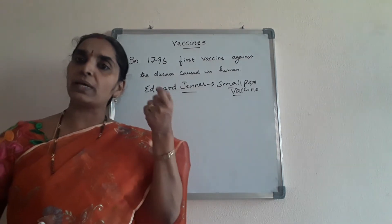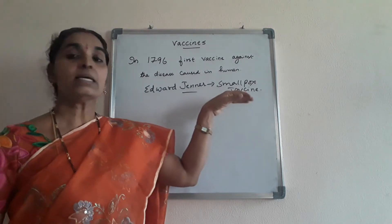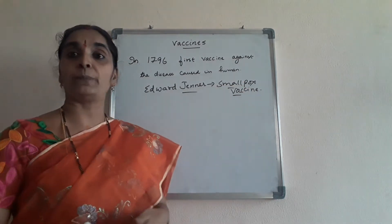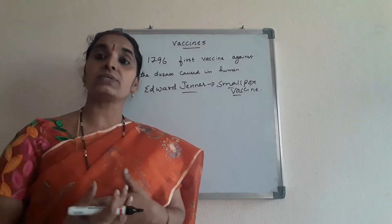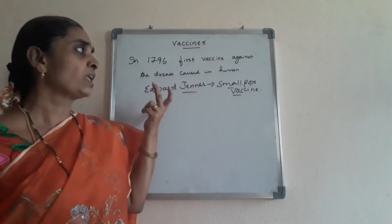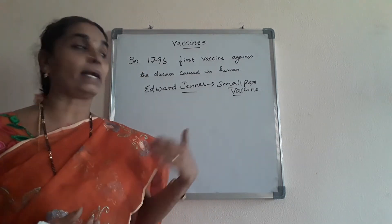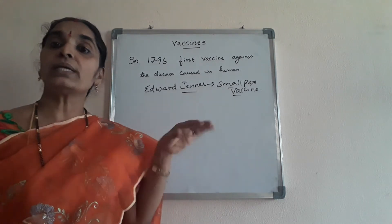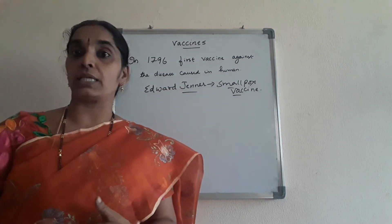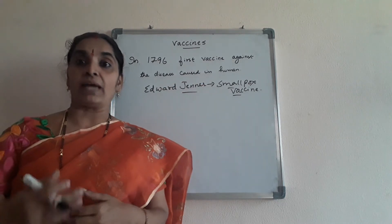He found that even when the boy was around smallpox patients, he did not get the smallpox disease. From this he concluded that the disease could be eradicated by inoculating a small, weakened cowpox vaccine. The cowpox was a very mild disease, but smallpox was a very severe and dangerous disease that killed patients in those days. In this manner, Edward Jenner paved the way for the invention of several other vaccines.